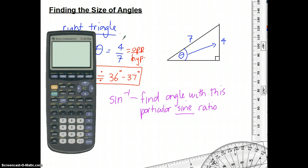So this is all we have to do. I activate sine inverse, so inverse sine, and I tell it that my sine ratio is 4 over 7. Close my parenthesis, press enter. Oh, look at that. 34.8 degrees.